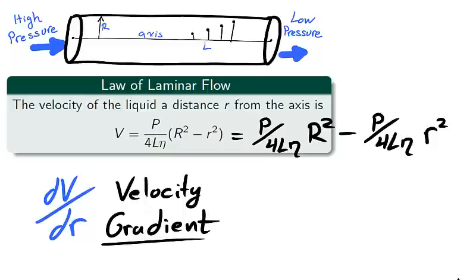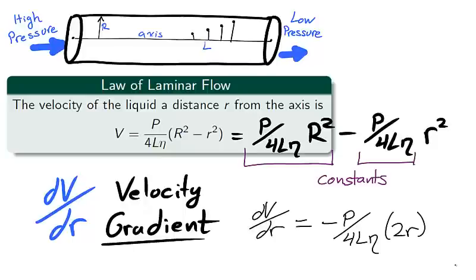The liquid has been chosen, hence eta is a constant, and the pressure on each end is constant, hence P is constant. Therefore we can take the derivative with respect to little r. Notice that the left part of our expression is constant, hence has a derivative that is zero.